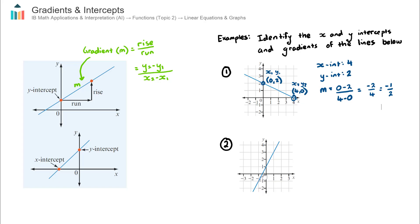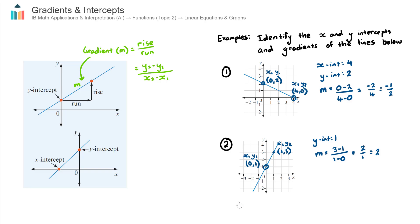Let's go through example 2. I don't know the x-intercept yet, so I'll leave that blank. I do know the y-intercept is 1. To calculate the gradient, I need two points: (0, 1) and (1, 3). Labelling them x1, y1 and x2, y2, my gradient equals y2 subtract y1 over x2 subtract x1, so 3 subtract 1 over 1 subtract 0, which is 2 over 1 — a gradient of 2. So I have the y-intercept and the gradient, but not yet the x-intercept.